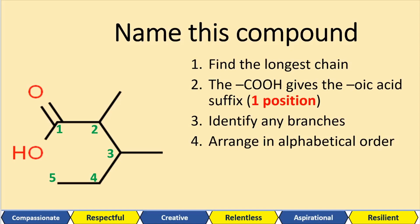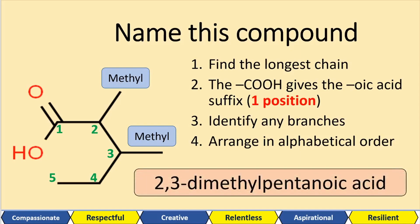We've got a branch — a methyl group on carbons two and three. So it's 2,3-dimethyl. Putting that all together, that is 2,3-dimethylpentanoic acid.